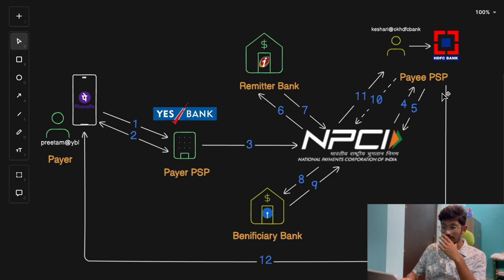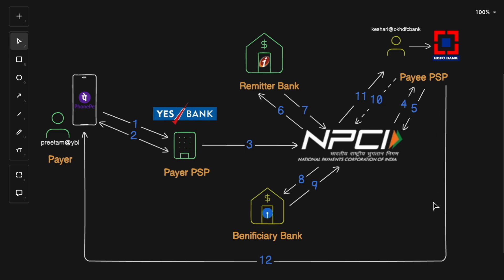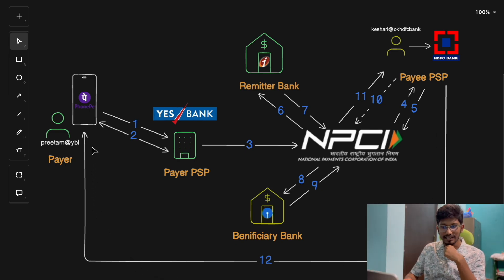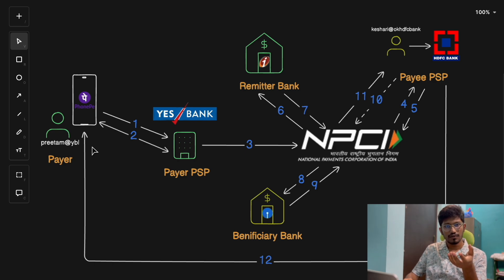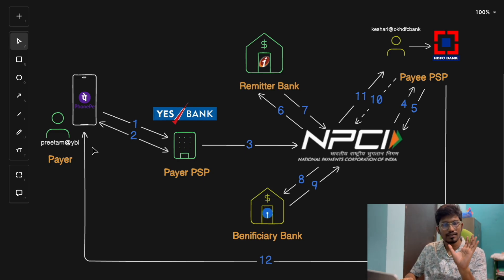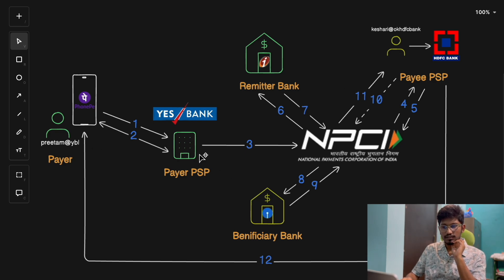In the final Step 12, the Payer PSP sends a confirmation message to your UPI app letting you know whether the payment was successful or unsuccessful. After that, you also get a notification from your UPI app confirming the final status of the payment. This is how the entire UPI payment process works.